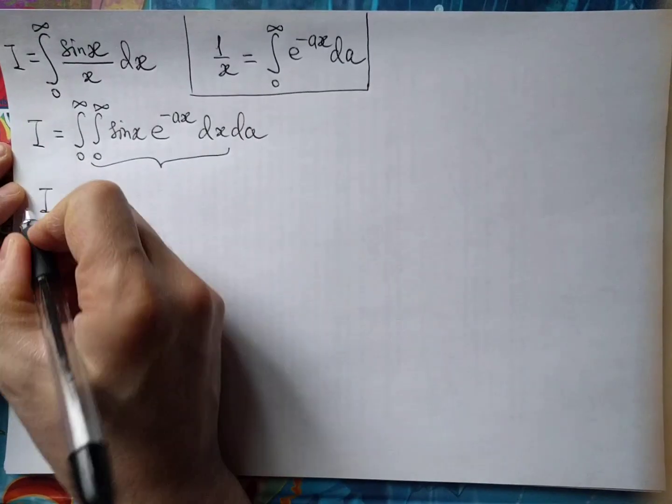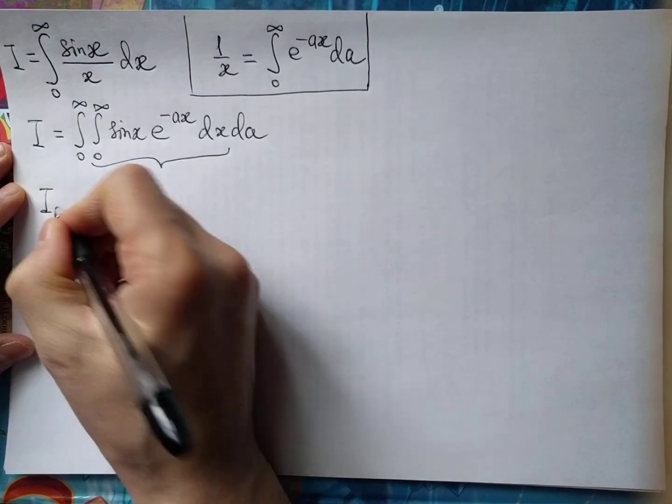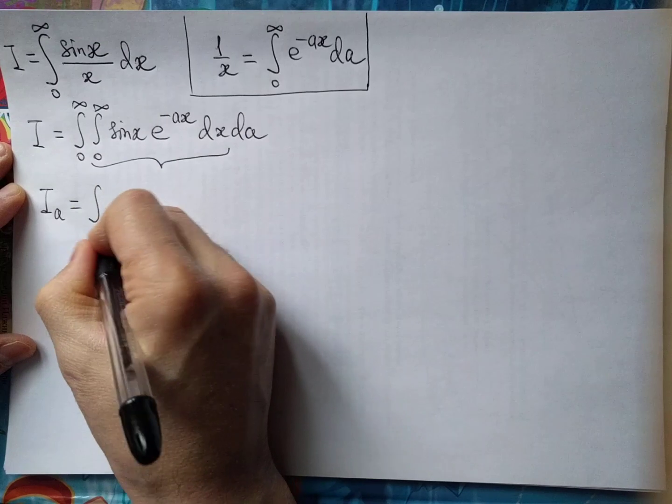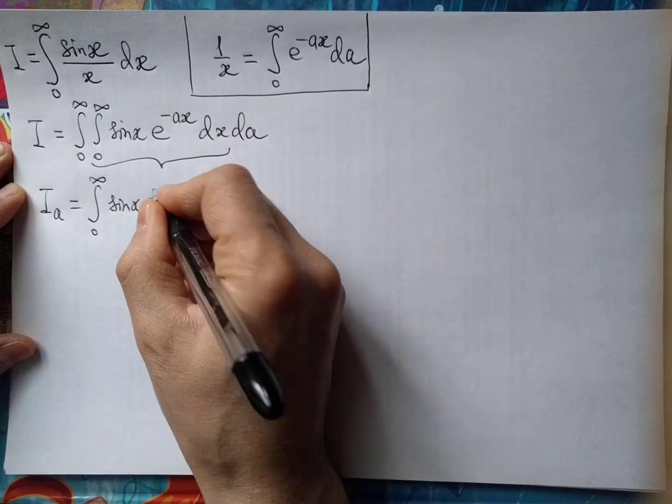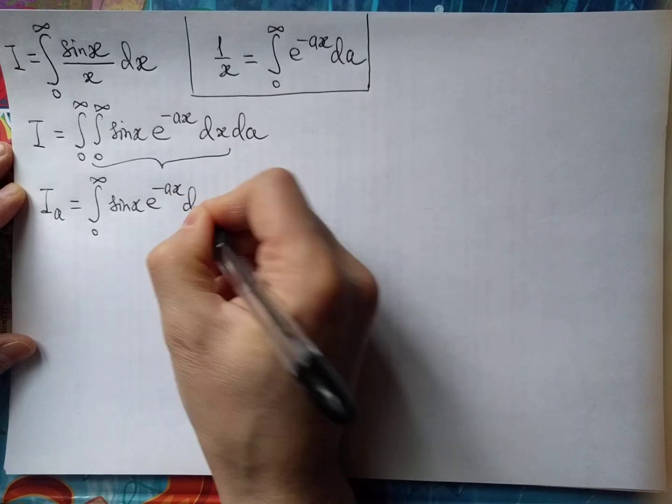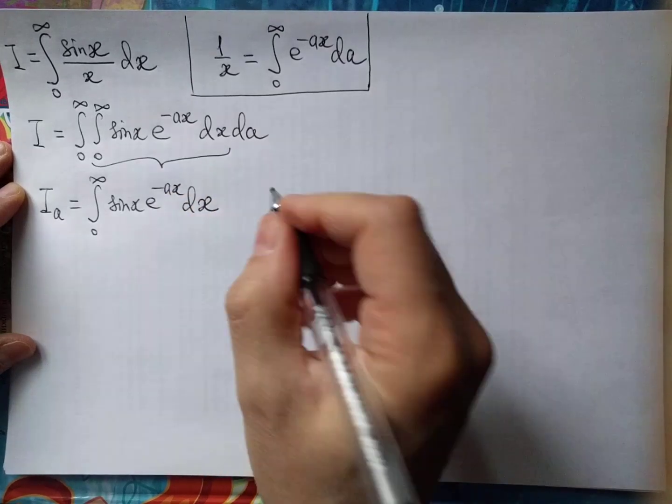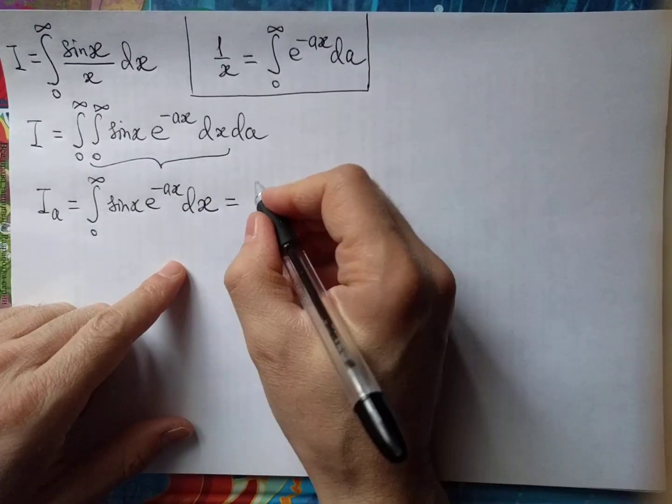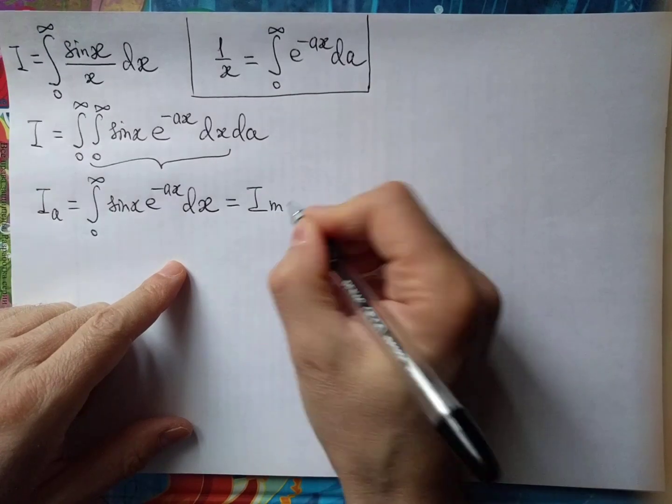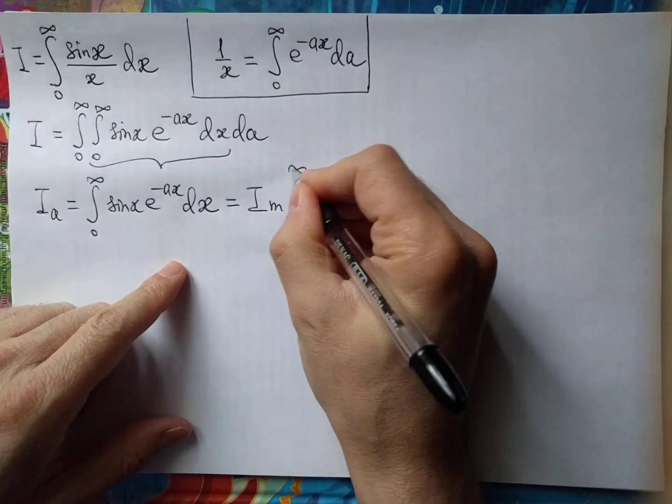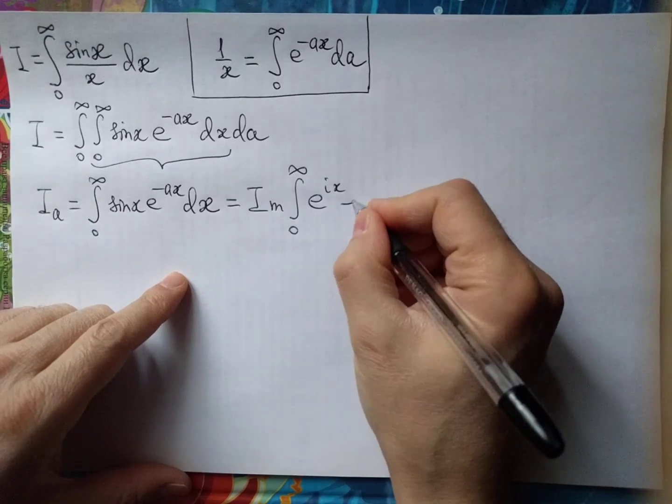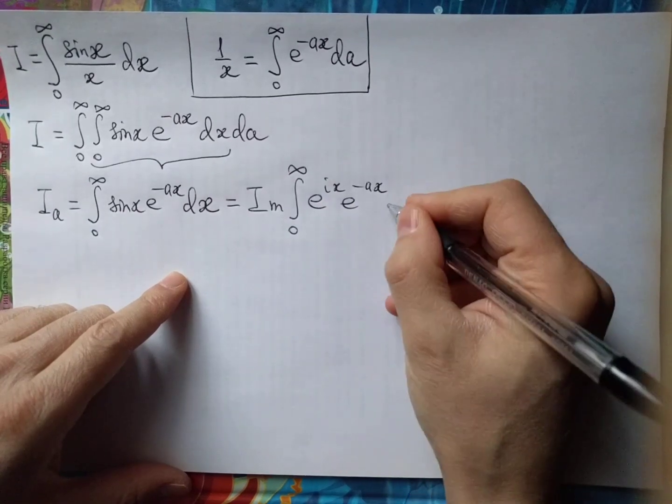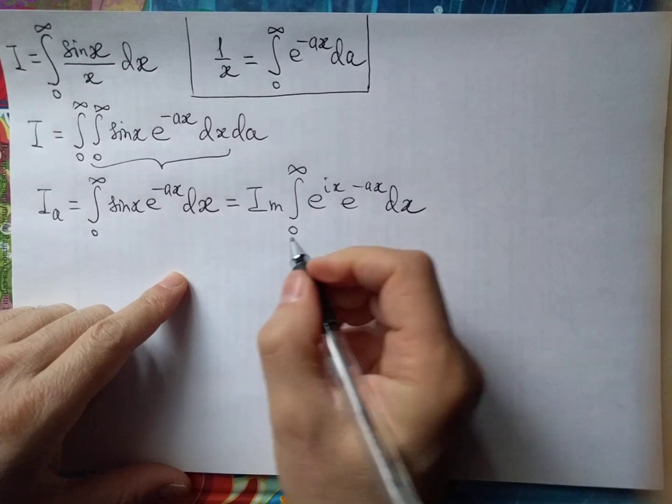So let's assign i subscript a as a partial integral, and obviously this is an imaginary part of this integral.